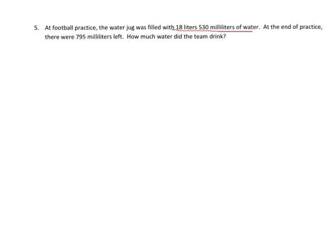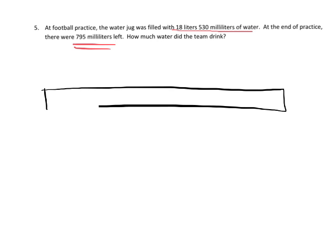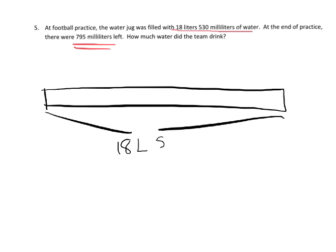For our last problem, we have a football practice scenario: there's a water jug filled with 18 liters 530 milliliters of water. At the end of practice there was only 795 milliliters left. How much water did the team drink? Let's draw a tape diagram: when they began they had 18 liters 530 milliliters of water, and a lot of that water was drunk.